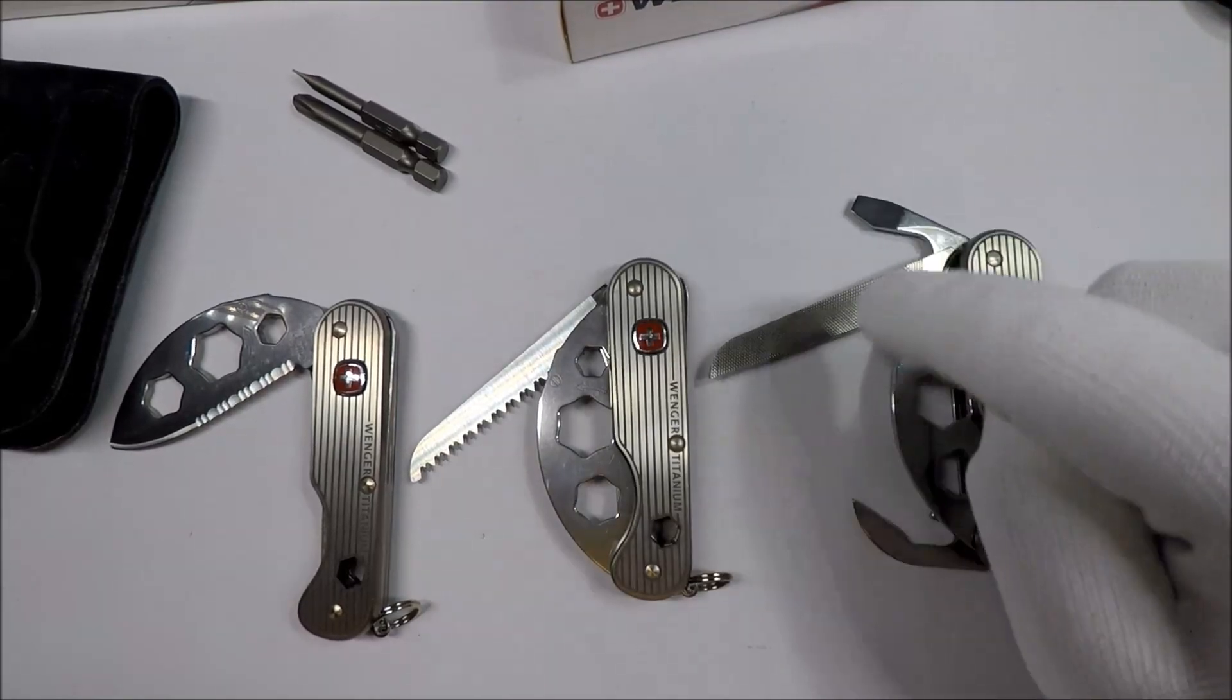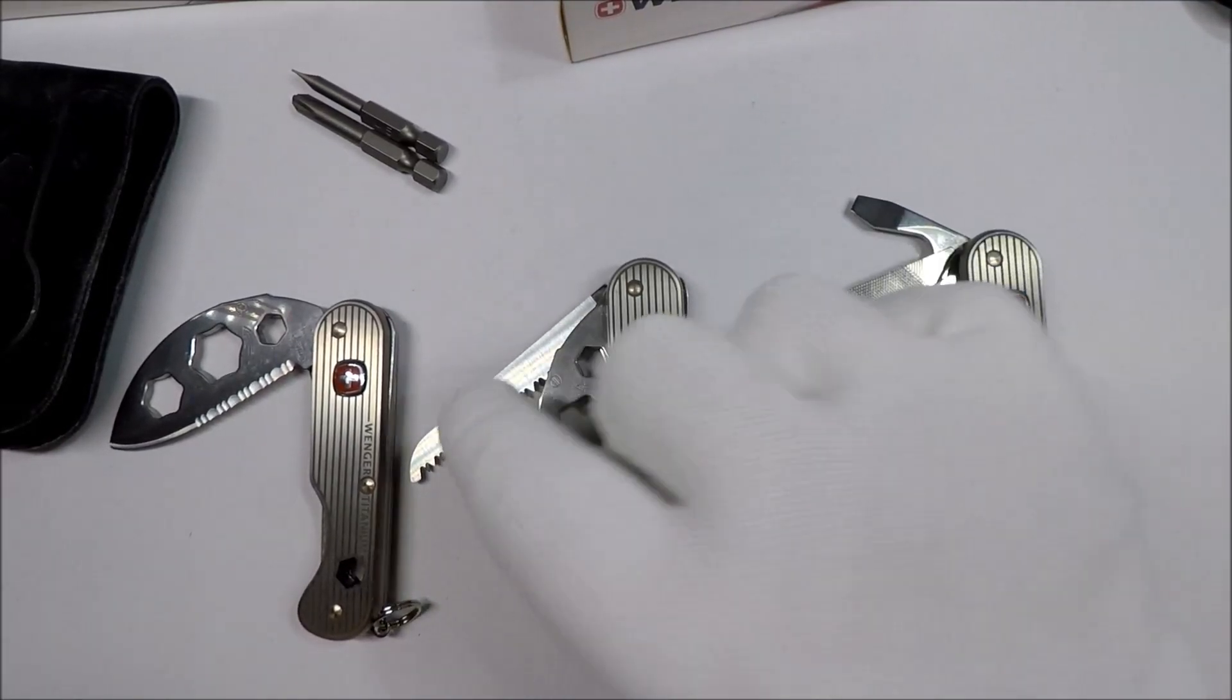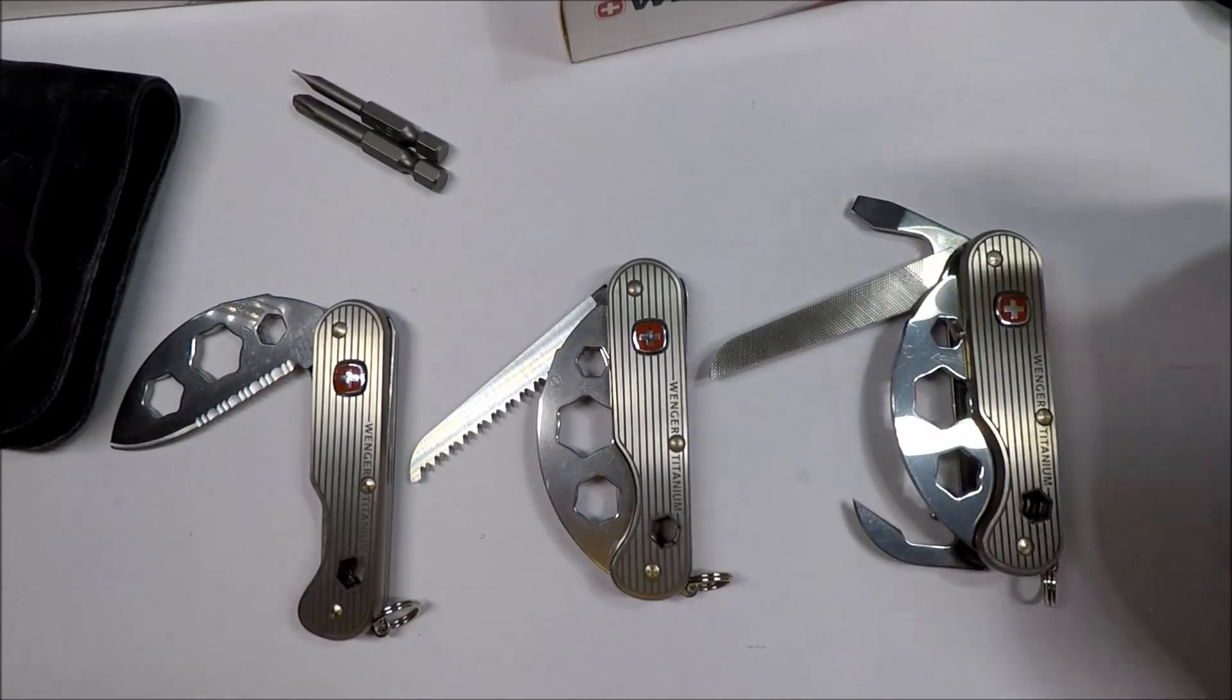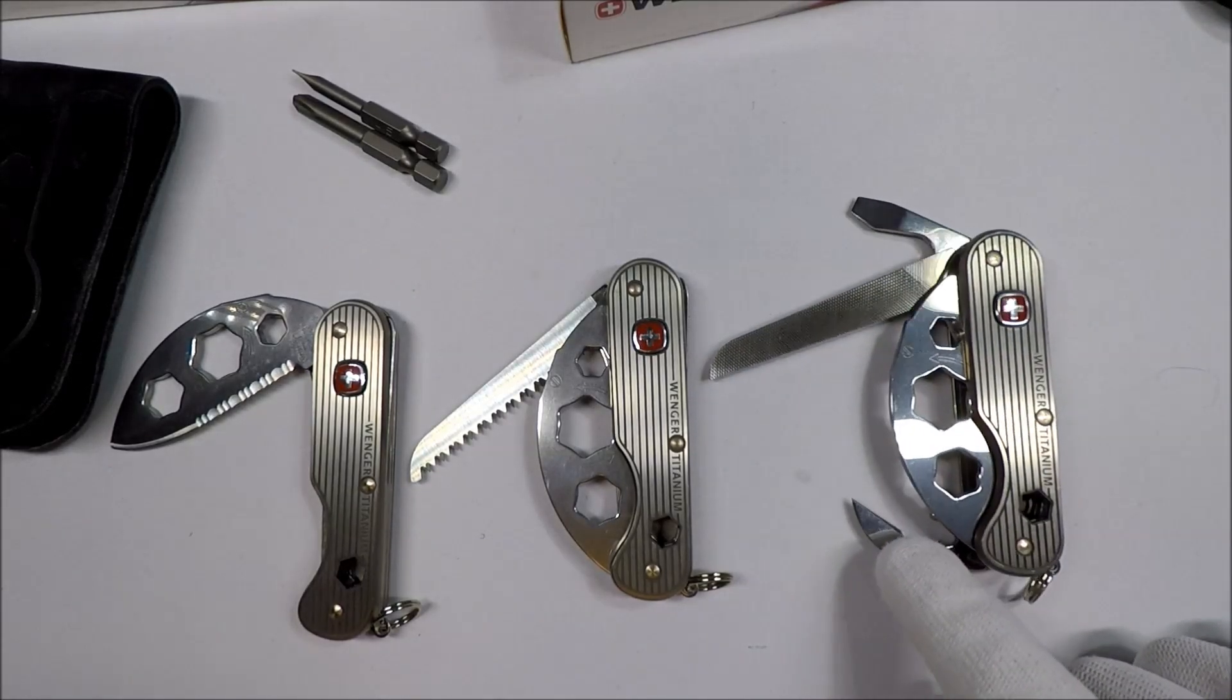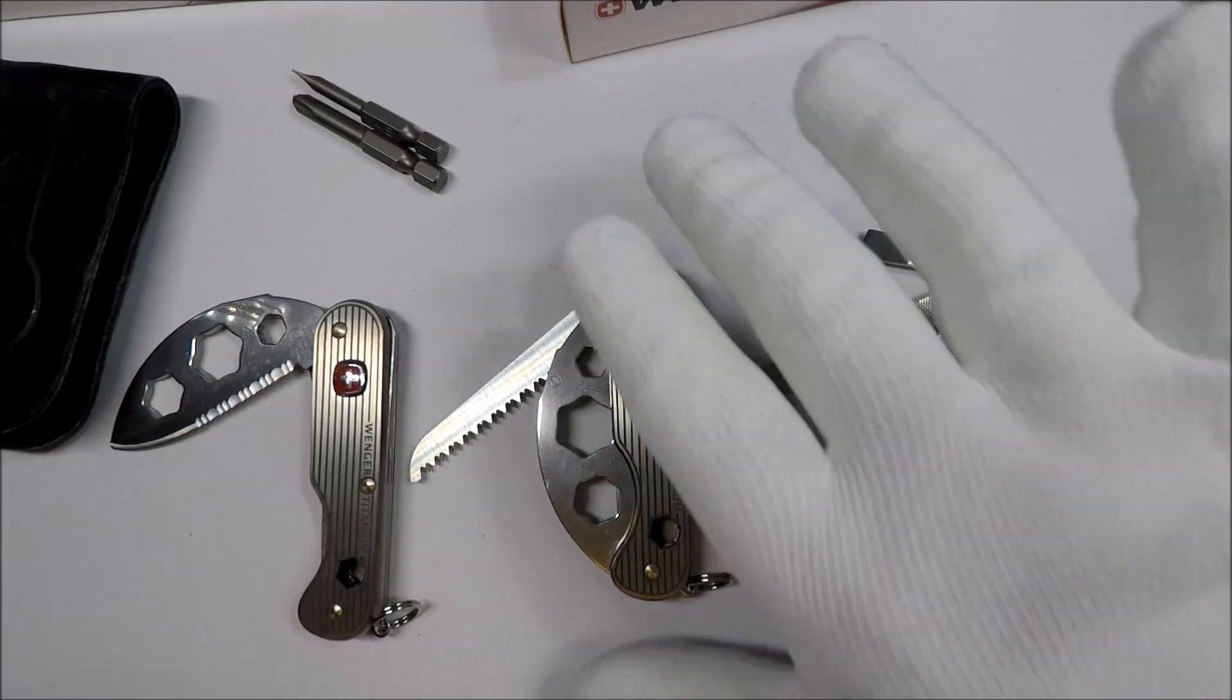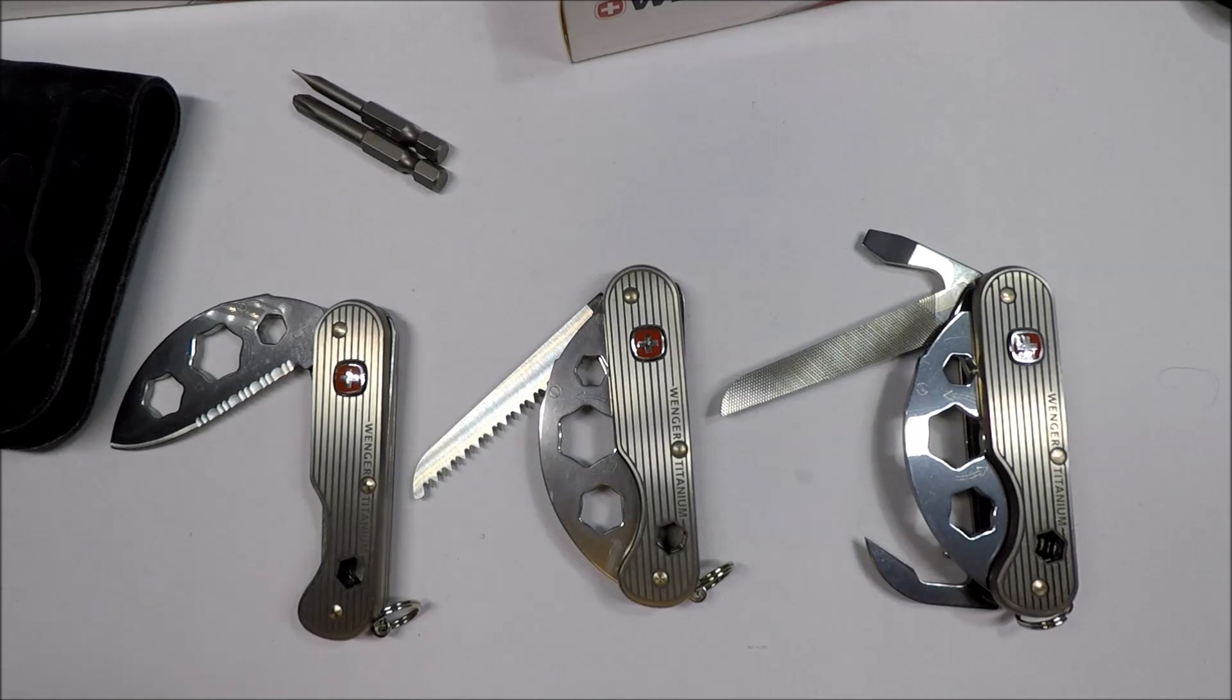The titanium two is the knife blade and the saw. And the titanium three, they swap a metal file for the saw blade. And you get the bottle opener, flathead screwdriver, wire stripper, and then the Wenger style can opener. And you also have the scale tools. You also have the scale bits that come with it.